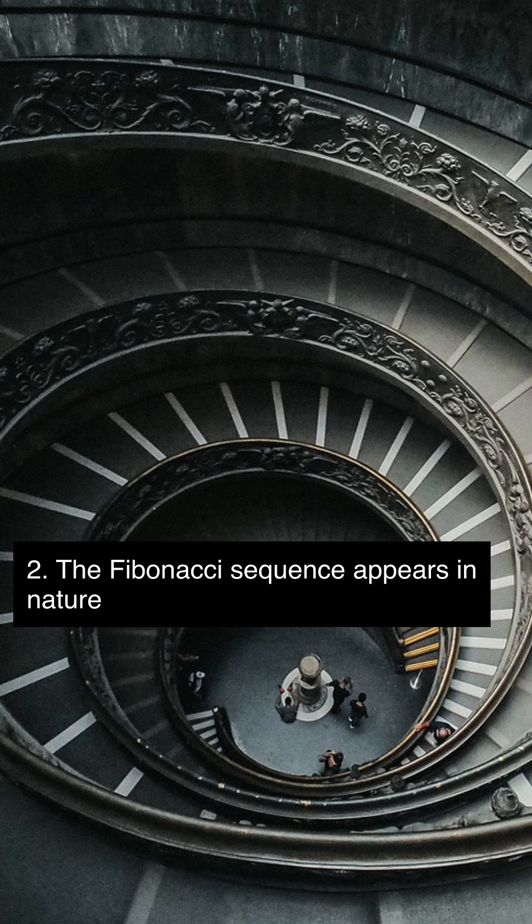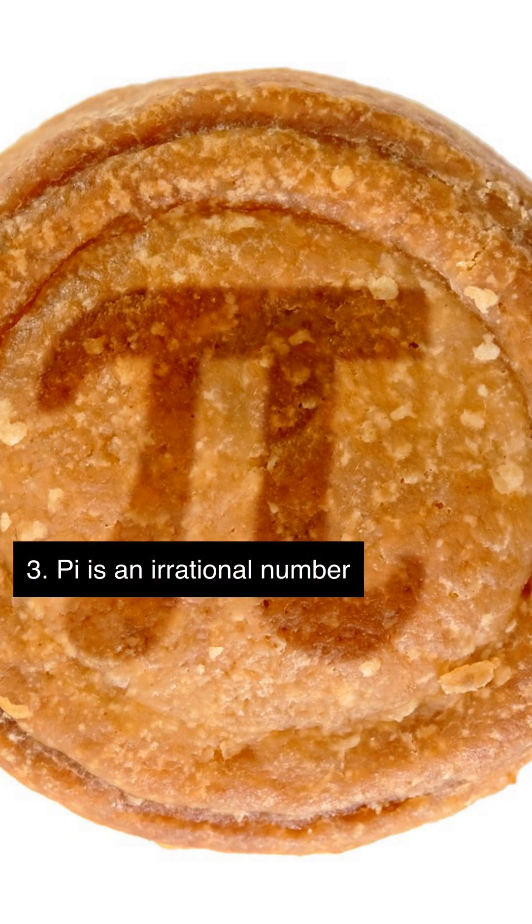Pi, the mathematical constant representing the ratio of a circle's circumference to its diameter, is an irrational number meaning it cannot be expressed as a finite decimal or fraction.